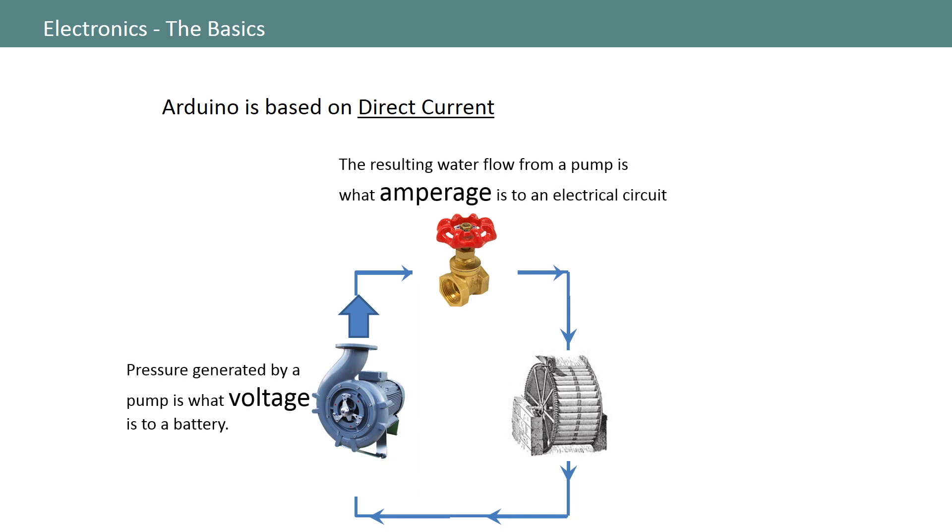But what about the water wheel? Well, that wheel is creating resistance to flow, in effect slowing the flow of water down through the system. In this way, a load in an electrical circuit, such as a light bulb, essentially creates resistance to flow, similar to a water wheel in our engineered water system. In electrical systems, we measure this resistance in units of ohms.